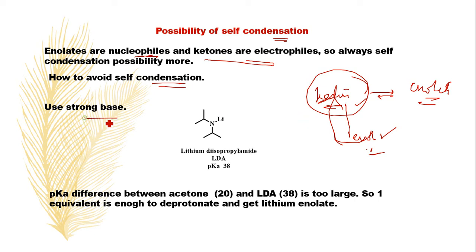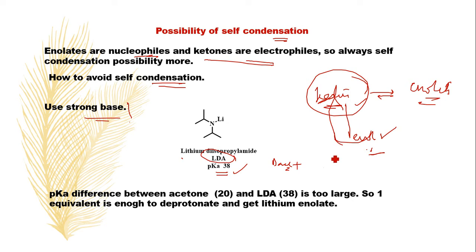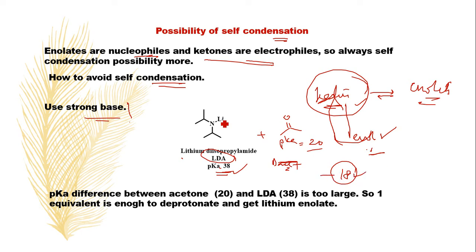The answer is to use a very strong base to abstract the proton so that it gives you a stable enolate. For example, lithium diisopropylamide (LDA) has a pKa value of 38. It can abstract the proton from the acidic position of other molecules. If you treat it with acetone (pKa 20), the difference is 18 — which is large — so one equivalent of LDA is enough to deprotonate acetone and we can avoid self-condensation.